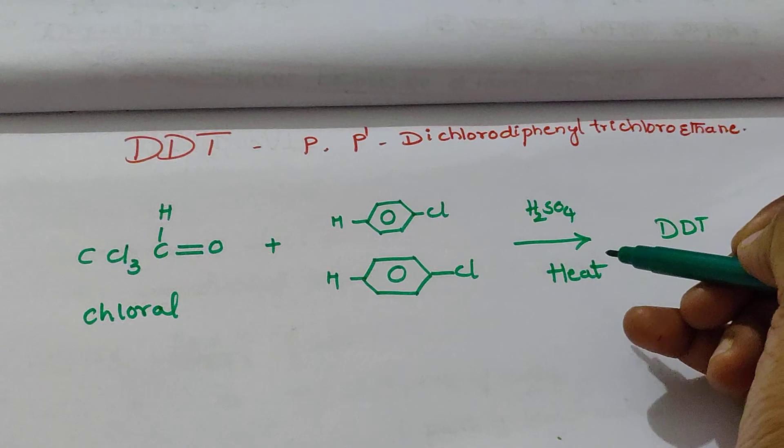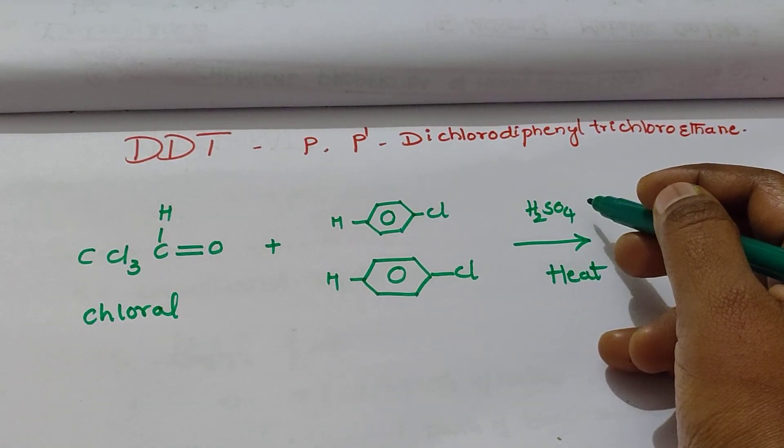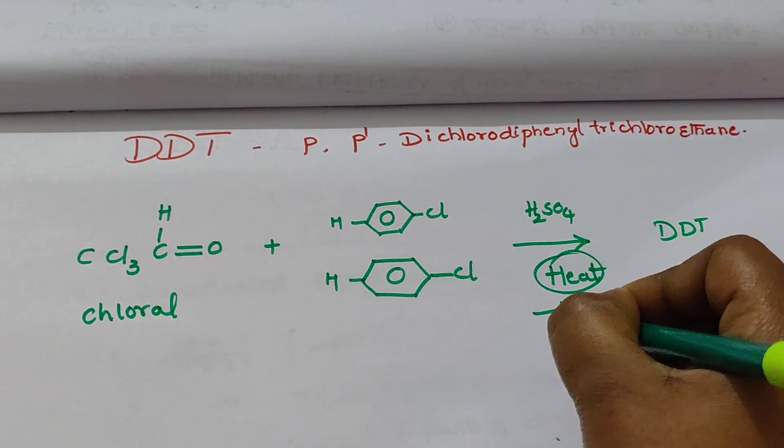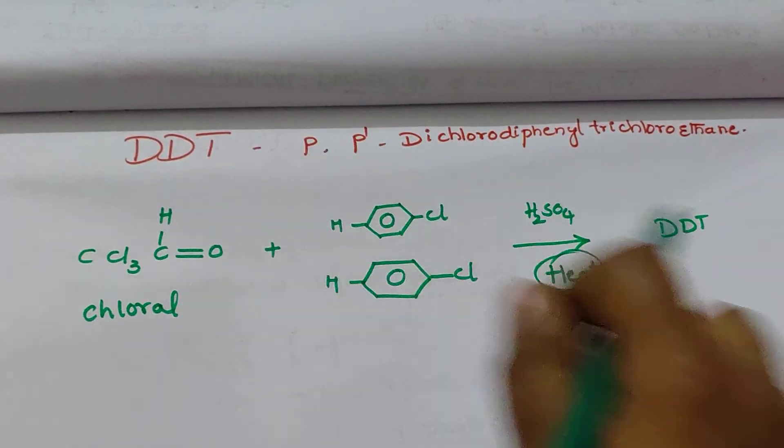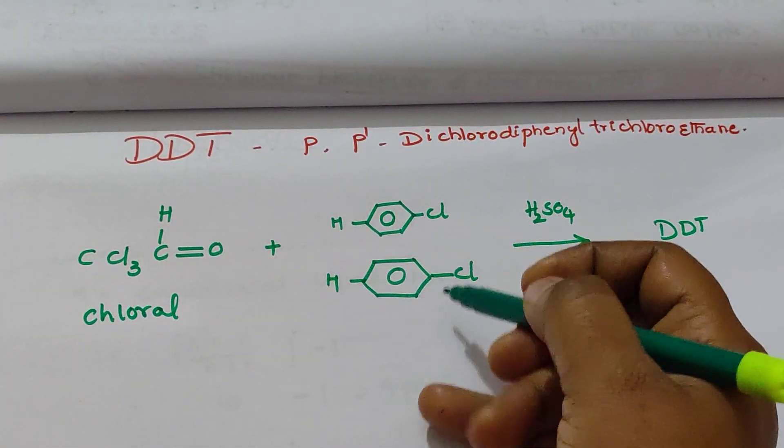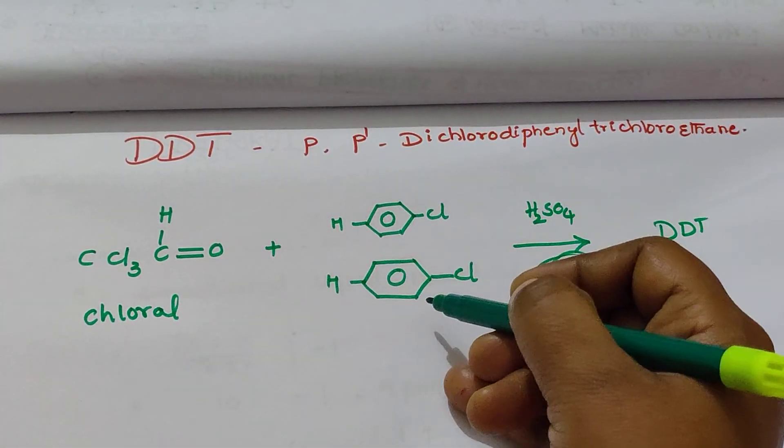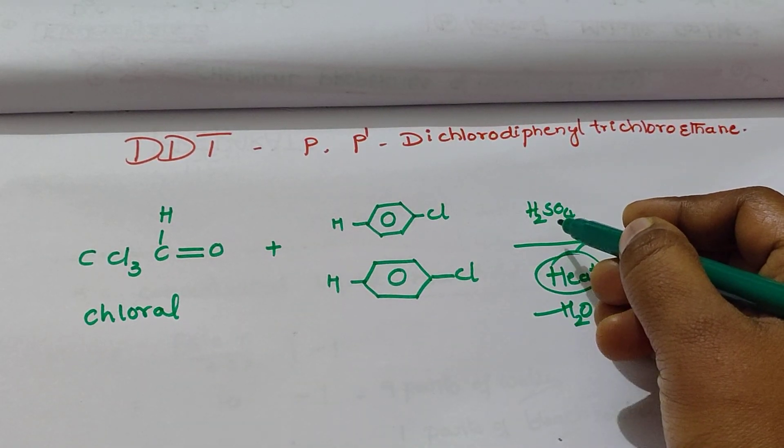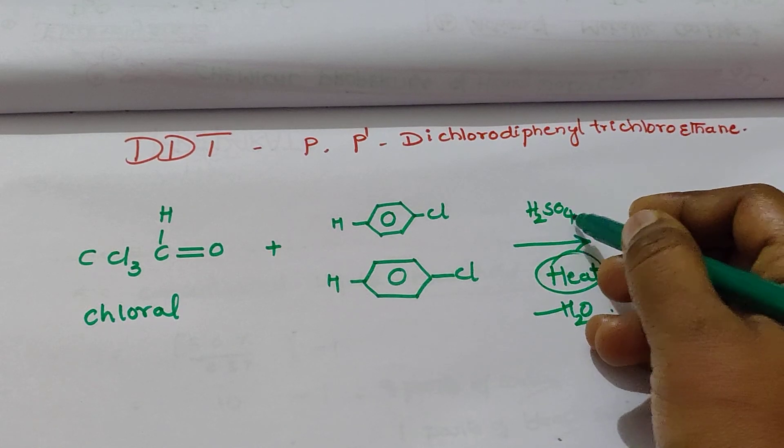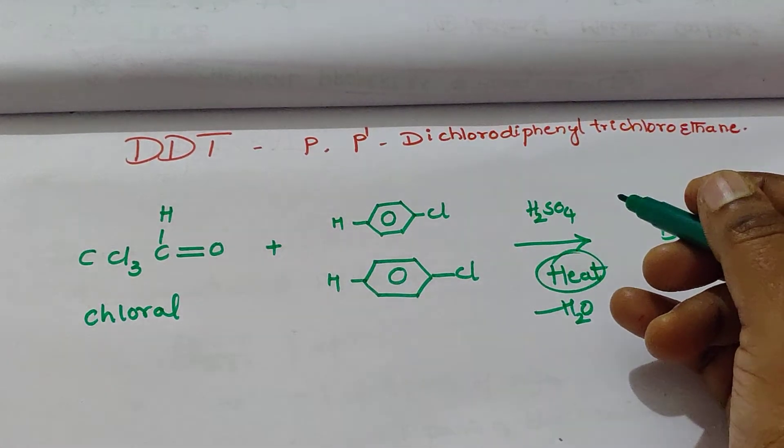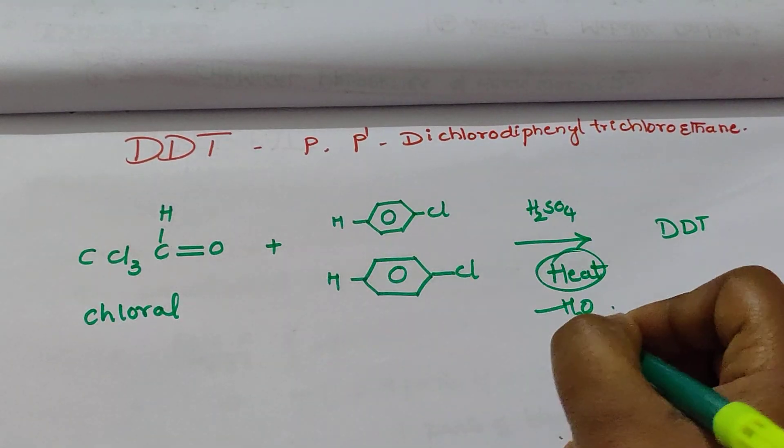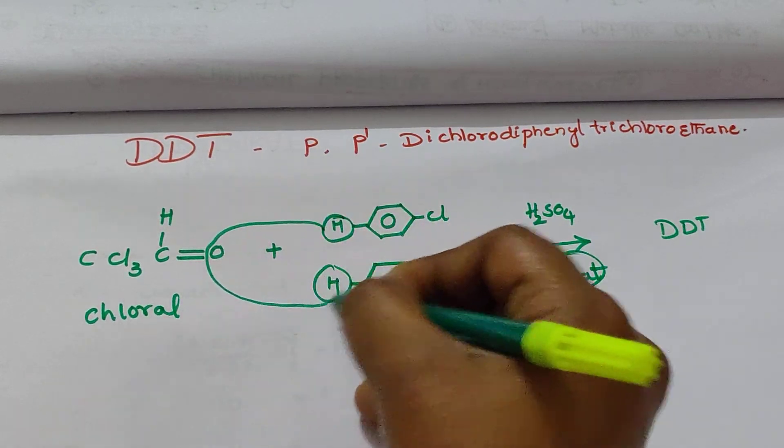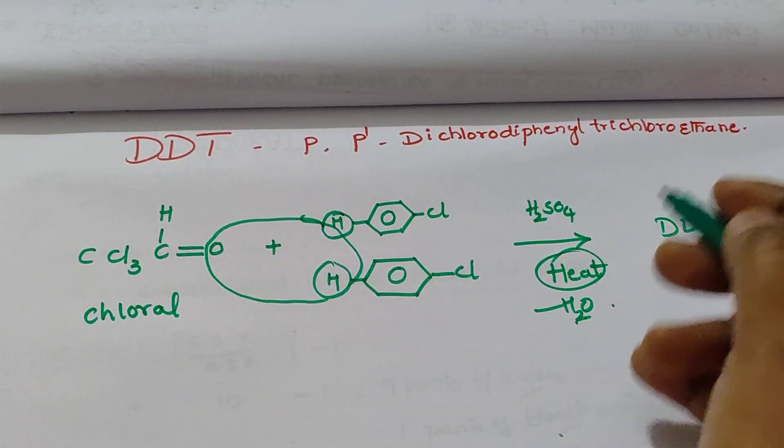Sulfuric acid is a dehydrating agent and this is an exothermic reaction. It heats to remove water molecule from the atoms. When chloral reacts with chlorobenzene diphenyl groups, it is treated with sulfuric acid, H2SO4, to remove water molecule - that means the hydrogen and oxygen - to get DDT.